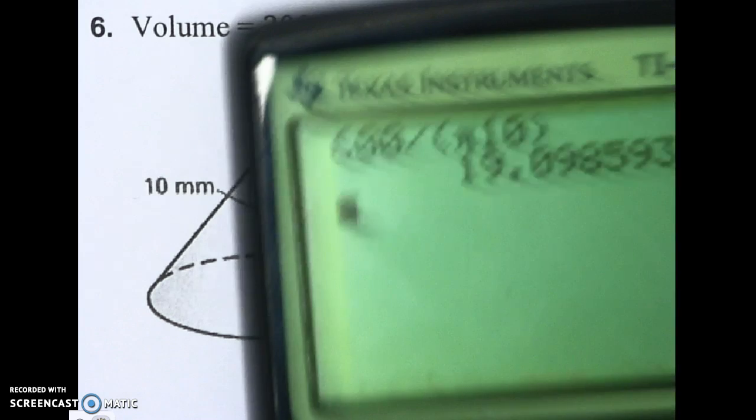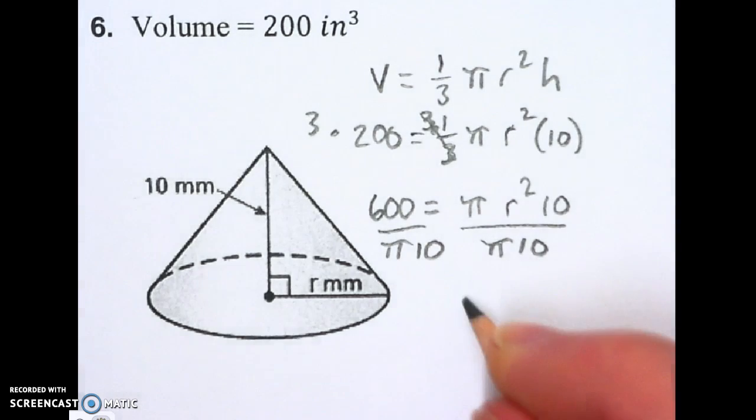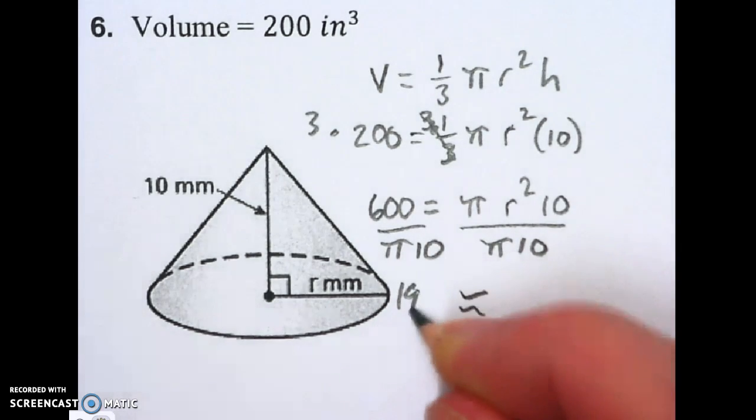So about 19.1. I'm going to leave that number on my calculator because I don't want to round wrong. It's about 19.1.